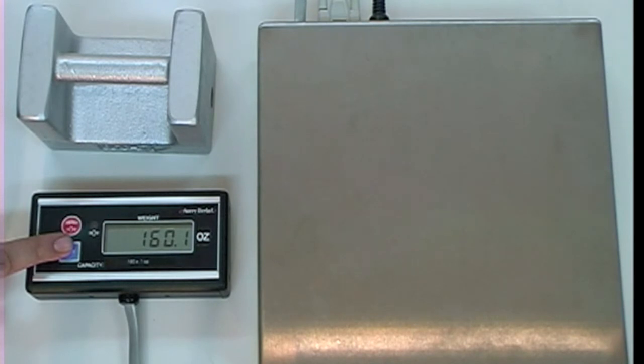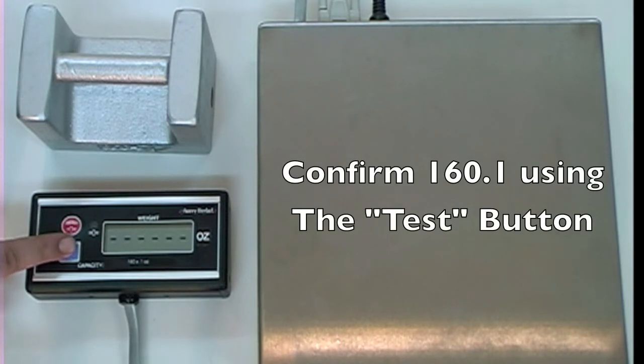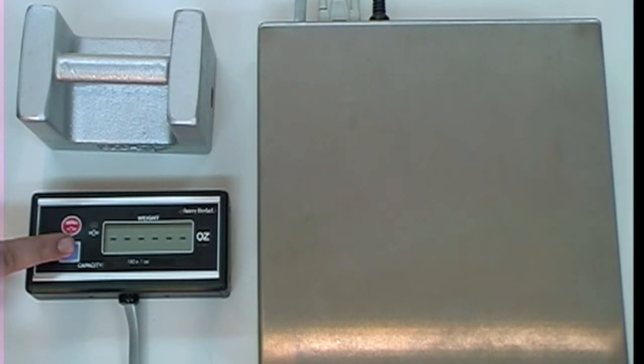The scale should now read 160.1. If not, then press the red zero button until it does. Confirm your selection using the blue TEST button. Clear all items away and off of the scale.